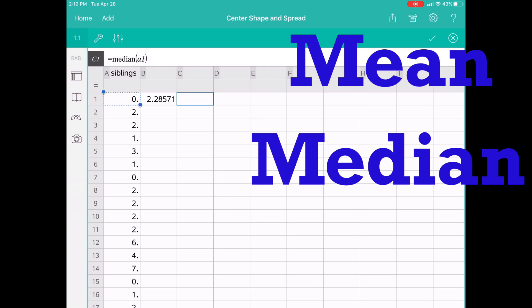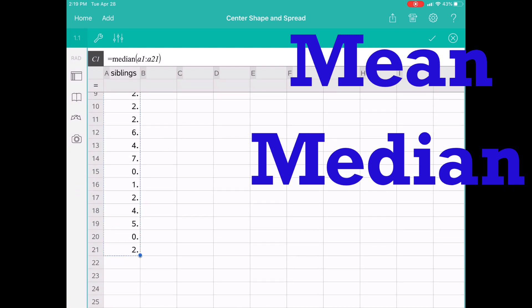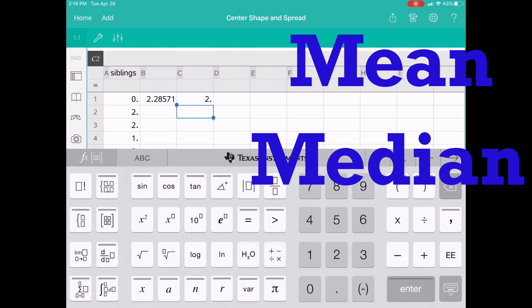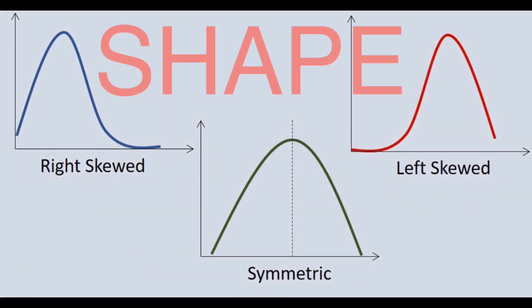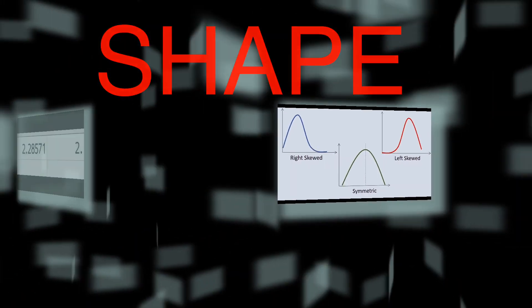What happens when these two numbers are the same? What happens when these two numbers are different? Knowing these numbers will help determine if the shape is right skewed, symmetrical, or left skewed.